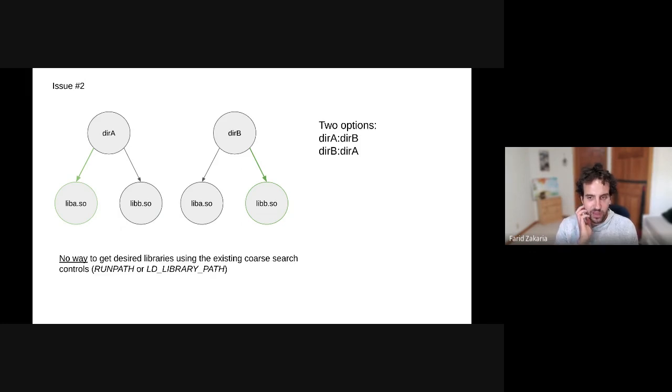Here's a paradoxical example of an application that may want to link against two libraries, library A and library B, or libA and libB found in directory A and directory B. I've highlighted them in green in this graphic of the desired libraries to load.